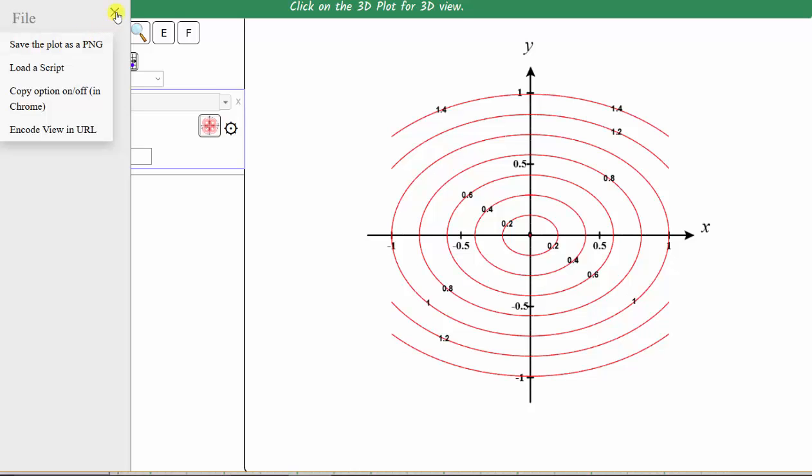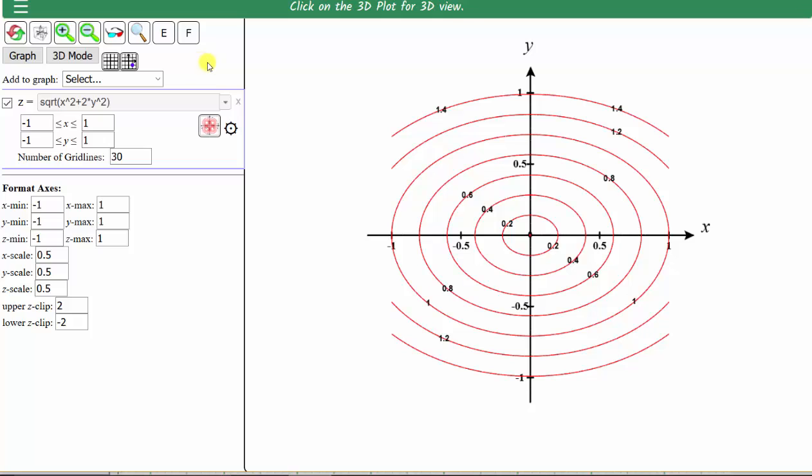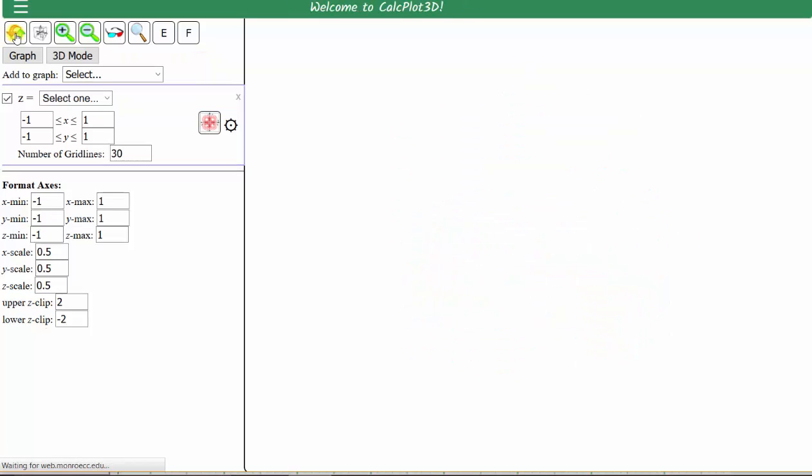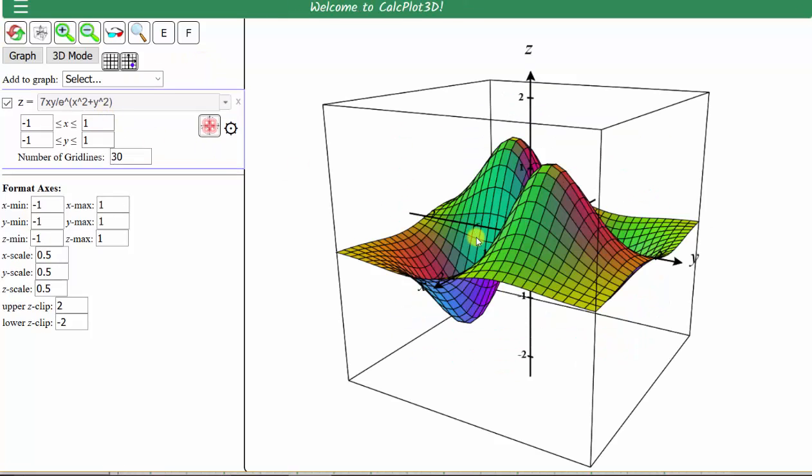Let's graph the second contour plot. Let's reset the app by clicking these double arrows. We are going to get the default function again, and now we'll enter our second function.